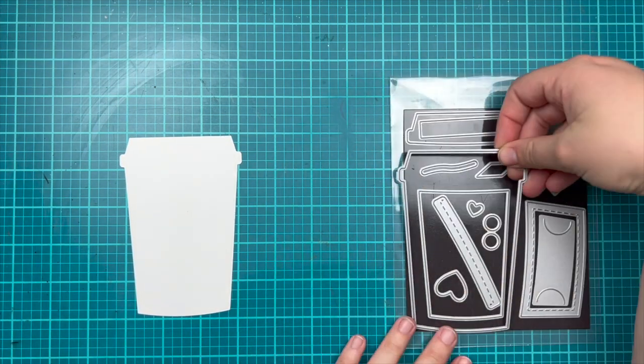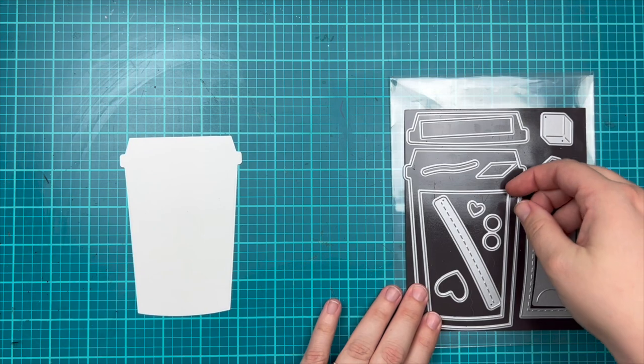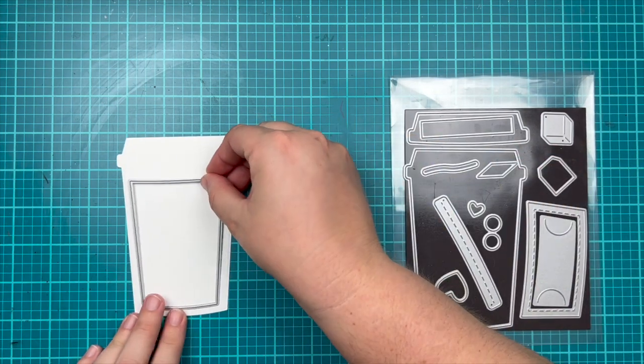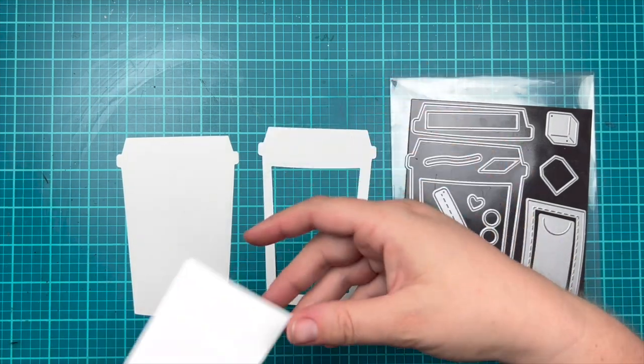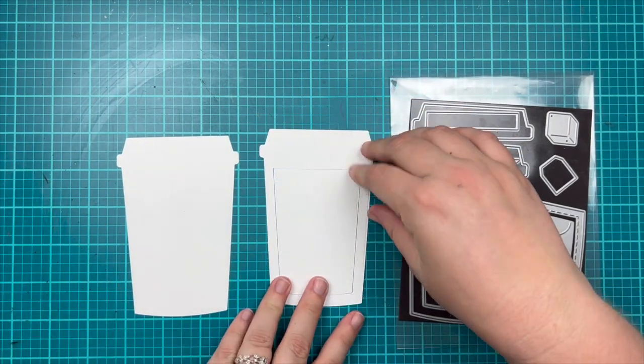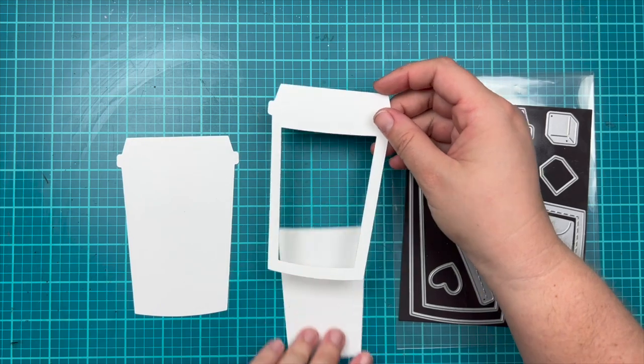The first one is the large coffee cup which gives you the cup and lid. There is also this smaller cup shaped piece which you could cut for a cup on its own or use it to create a shaker window out of the larger coffee cup die cut.